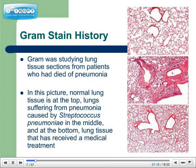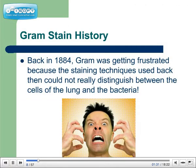Gram was studying lung tissue sections from patients who had died of pneumonia. In this picture, normal lung tissue is at the top, lungs suffering from pneumonia caused by Streptococcus pneumoniae is in the middle, and then at the bottom, lung tissue that has received medical treatment. Back in 1884, Gram was getting frustrated because the staining techniques used back then could not really distinguish between the cells of the lung and the cells of bacteria.